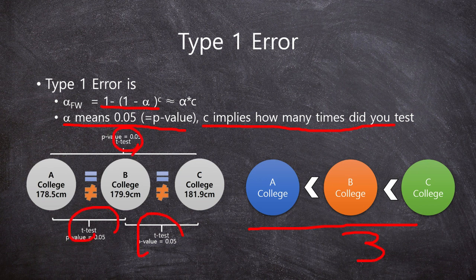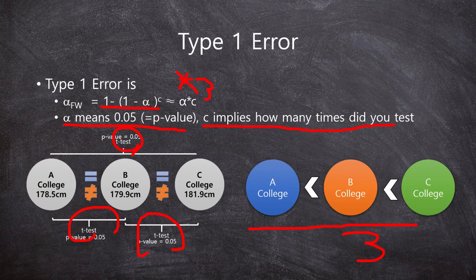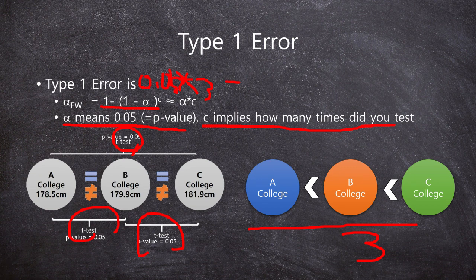So here C is 3, and multiplied by alpha is 0.05. It's almost 0.15.